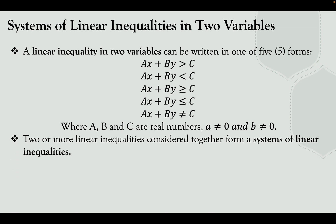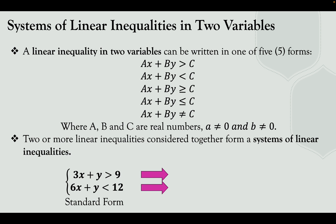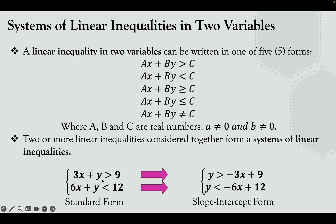Two or more linear inequalities form a system of linear inequalities. For example, given 3x plus y greater than 9 and 6x plus y less than 12 in standard form, we can also write these in slope-intercept form: y greater than negative 3x plus 9, by transposing 3x to the right side, and y less than negative 6x plus 12, by transposing 6x to the right side.